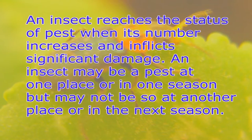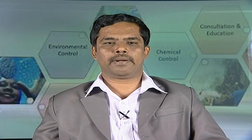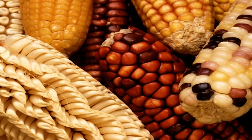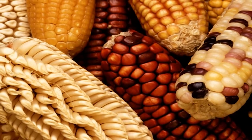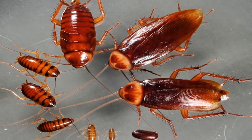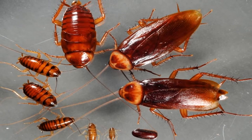An insect reaches the status of pest when its numbers increase and it inflicts significant damage. An insect may be a pest at one place or in one season, but may not be so at another place or in the next season. Therefore, being a pest or not is only a matter of insect numbers. In any crop ecosystem, if a pest can be controlled at a cost less than the expected market value of the potential increase in yield, the pest species can be considered an economic or controllable pest.